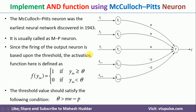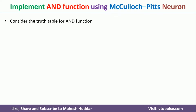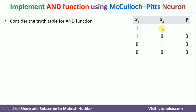Now we will try to understand how to implement the AND function using the MP Neuron. The truth table of the AND function shows that the output is high only when both inputs are high. If any one input or both inputs are low, the output is low.